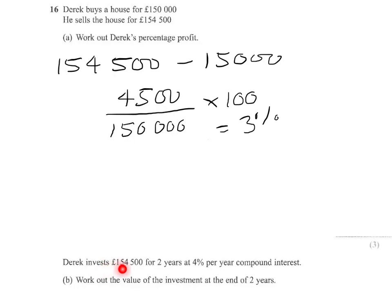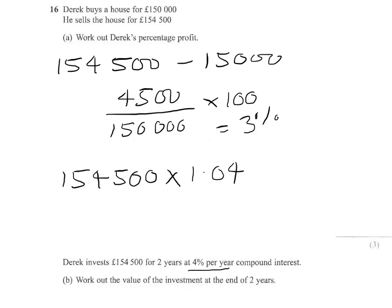Derek invests £154,500 for two years at 4% per year compound interest. We need to work out the value of the investment at the end of two years. The way I do this is I take the amount of money I'm investing, which is £154,500. I need to know the decimal equivalent for adding on 4%, which is 1.04. If you have 100% and you add 4%, you've got 104%, and 104% as a decimal is 104 over 100, which is 1.04.